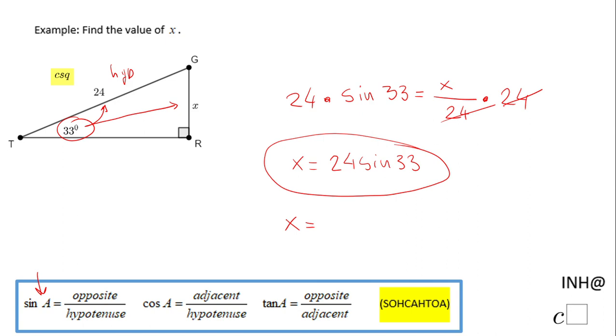Be sure you know how your calculator works. I end up with x equals 13.07, and I'm gonna round this to the nearest hundredth, so the length which is x is 13.07, or this is the exact value 24 sine 33.